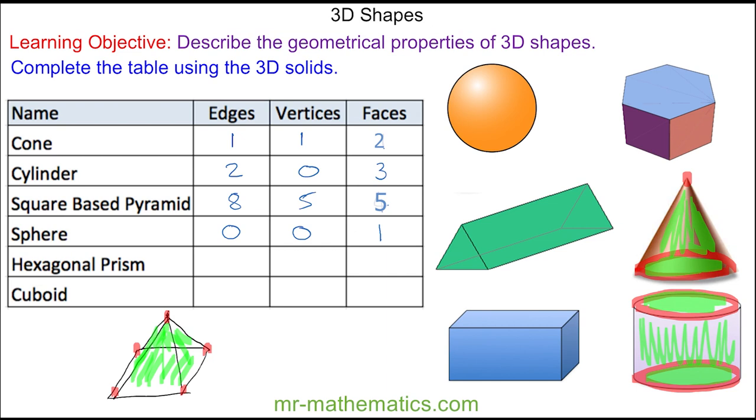For a hexagonal prism, we have six edges on the top face, six edges along the bottom face, and then another six edges connecting the two faces. So this is a total of 18 edges.